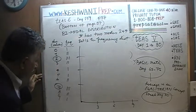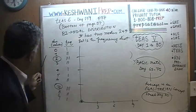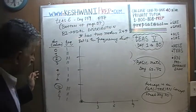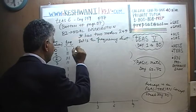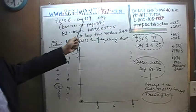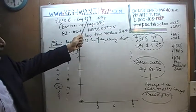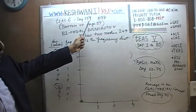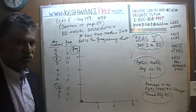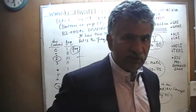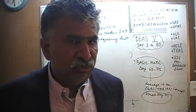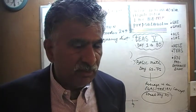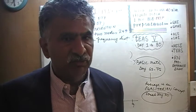1 person had a score of 0, so that's plotted right here. 2 people had a score of 1. On the y-axis we have frequency. In the frequency distribution, what we put on the y-axis is frequency, and what we put on the x-axis is the value — the observations.